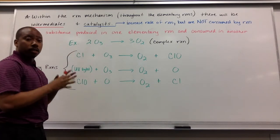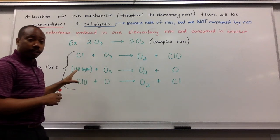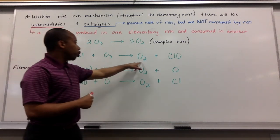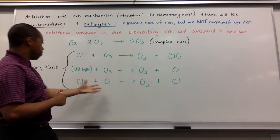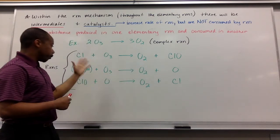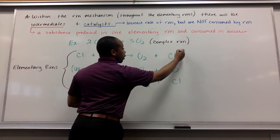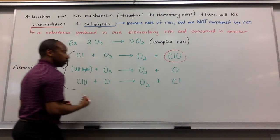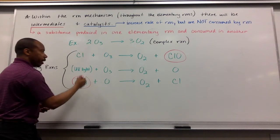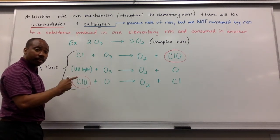We're looking for substances that were produced and then used later. Well, O2 was produced. Was it used later? No. ClO was produced. Was it used later in a different reaction? Yes, down here. So ClO was produced and then was used in a different elementary reaction. That makes it an intermediate.